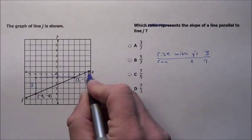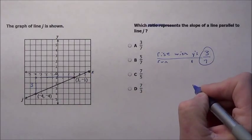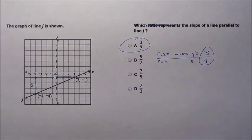It's going positive up to the right, so it's going to be 3 sevenths, which is choice A right there.